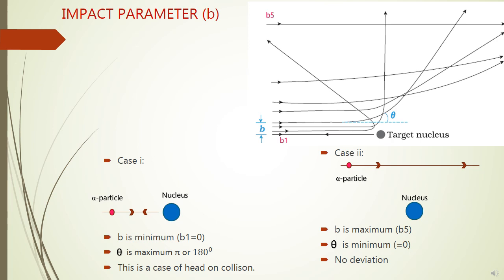When the impact parameter is maximum (B5), the scattering angle will be minimum, that is 0 degrees — the alpha particles pass undeviated. Hence, we can say that impact parameter and scattering angle are inversely proportional: as impact parameter increases, the scattering angle decreases.